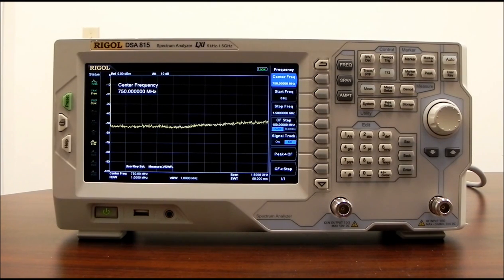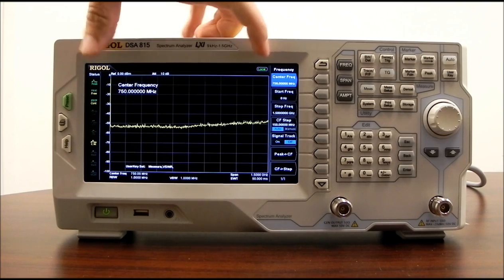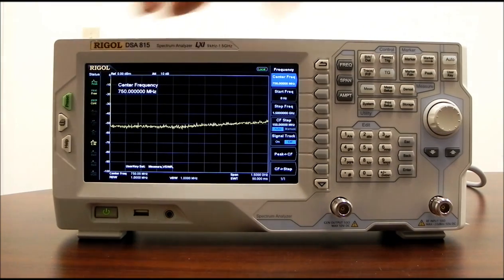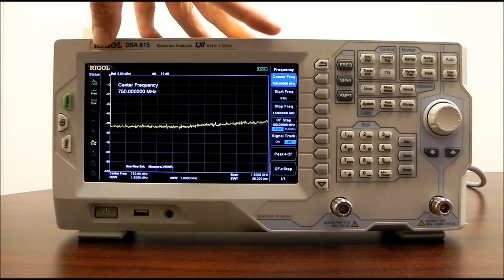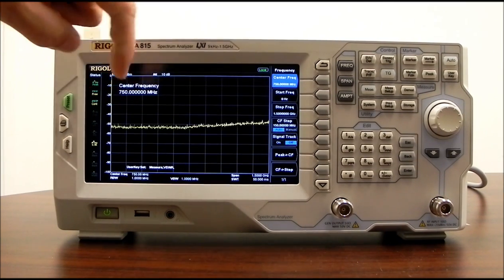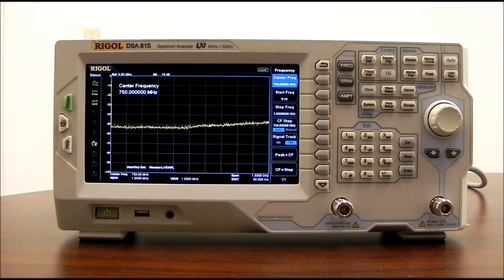Much like an oscilloscope, the spectrum analyzer is going to show amplitude, but instead of showing amplitude with respect to time as in an oscilloscope, it's actually going to show it with respect to frequency. And so what we can get is a very good indication of a frequency level and its amplitude relative to absolute value, but also relative to one another.